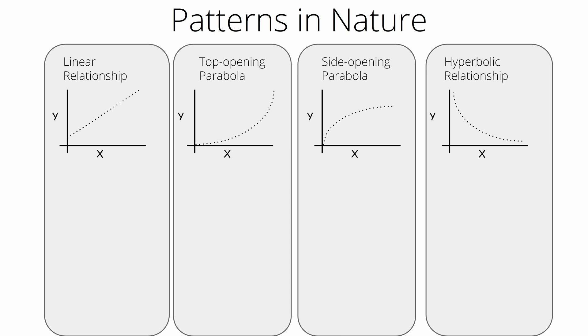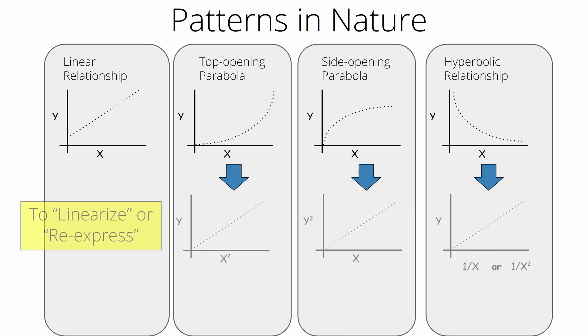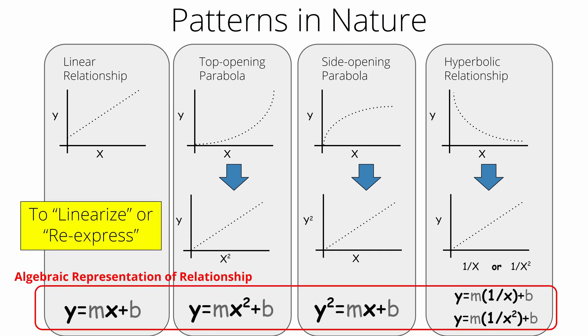Rather than using graphing software to add different types of curves, students should re-express their data so the final graph appears linear — this is sometimes called linearizing a graph. If the graph appears linear, the students can simply add a linear fit and write the corresponding linear equation as they have done before. The shape of a graph can be changed by modifying the values on either the x- or y-axis. A linear fit of the re-expressed graph can then be used to write the algebraic equation showing how the two variables are related.